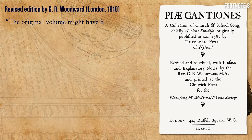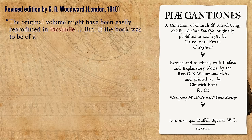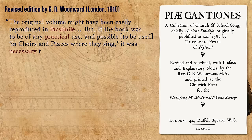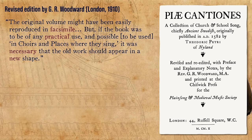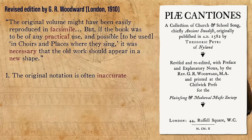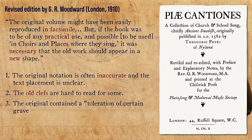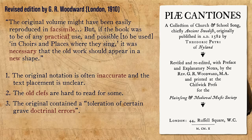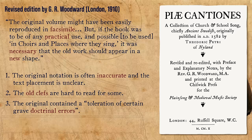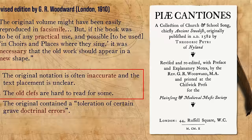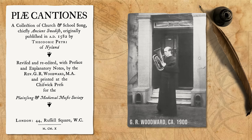The original volume might have been easily reproduced in facsimile, but if the book was to be of any practical use, and possible to be used in choirs and places where they sing, it was necessary that the old work should appear in a new shape. This is for three main reasons: one, the original notation is often inaccurate, and the text placement is unclear; two, the old clefs are hard to read for some; but most importantly, three, the original contained a toleration of certain grave doctrinal errors. That is, the original creators from 1582 altered some of the old texts in a way which was unacceptable to the Anglican priest Woodward in 1910. So he had to revise it.